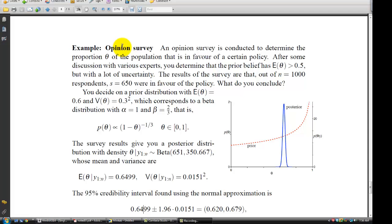An opinion survey is conducted to determine the proportion theta of the population that is in favor of a certain policy. After some discussion with various experts, you determine that the prior belief has theta greater than 0.5, but with lots of uncertainty. The results of the survey are that out of N equals 1,000 respondents, S equals 650 were in favor of the policy. What do you conclude?